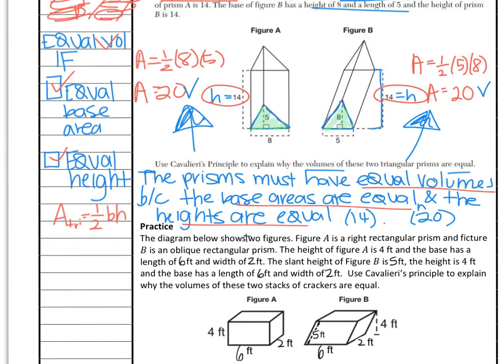One thing to mention: in this problem, the area — if you put units on it, say it said feet — the area would be feet squared, and the height would just be feet. If you're going to try to put units on it, make sure they match the dimensions. Area is always squared, and a regular height is just the regular unit, like feet.